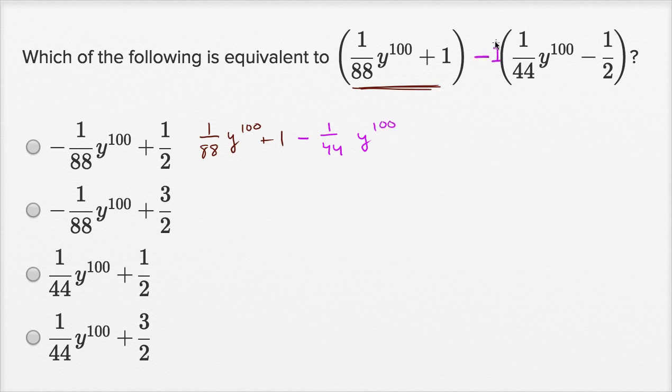And then negative, remember we're going to distribute it, so negative 1 times negative 1 half is going to be plus 1 half. Now let's see what we can do to further simplify it.